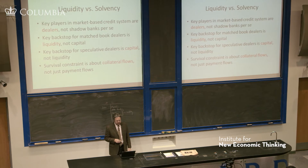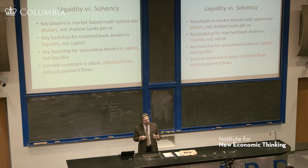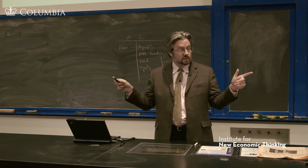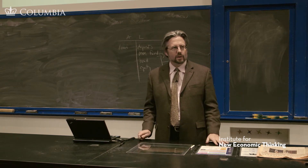Shadow banking is money market funding of capital market lending. The capital market securities are the collateral for the money market funding — so they go together. These are the four ideas that come from thinking about the shadow banking system and this crisis through the lens of this course. We're at a Bagehot moment — 1873 — building it from scratch, and we need to get on with it. I hope maybe some of you will help.